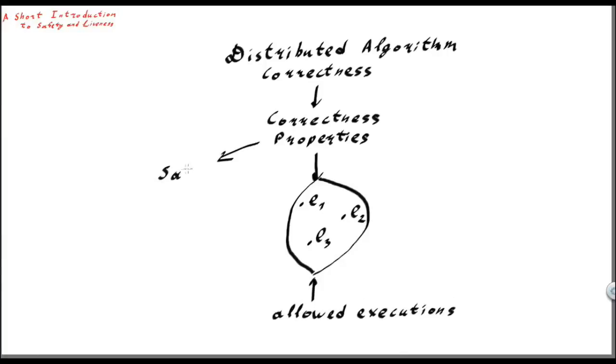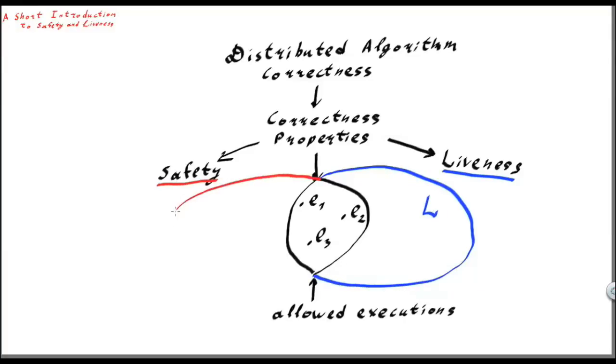There are two basic kinds of correctness properties: safety properties and liveness properties. In fact, it can be shown that any correctness property P can be represented as an intersection of a safety property and a liveness property.